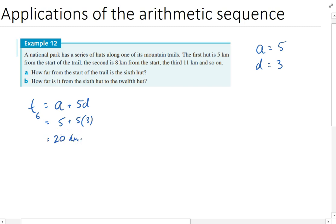If the first hut is 5 km and the second hut is 8 km, then the sixth hut is 20 km from the start line. That's straightforward so far.